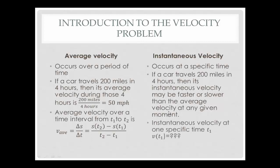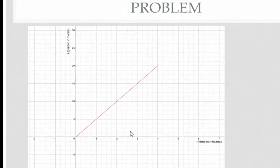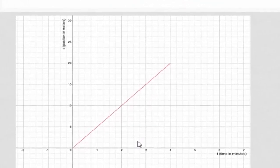Instantaneous velocity is a little bit trickier, because it occurs at only one specific time rather than over a course of time between two times. It's not as easy to calculate at first — we're going to have to dig a little bit to figure out how to do this. Let's take a look at a graph as an introduction to instantaneous versus average velocity.